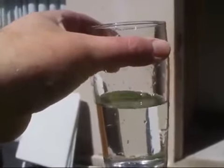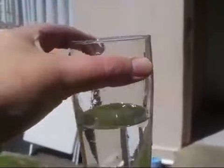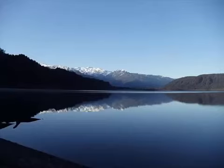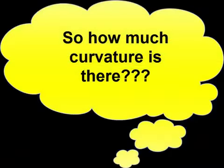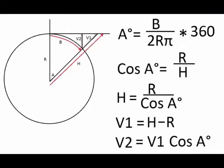Whether water is in a pipe, a lake, or an ocean — water is always level. The earth is flat. So how much curvature is there and how can we calculate it? Let's look at how we can calculate the curvature and how to practically achieve this experiment.